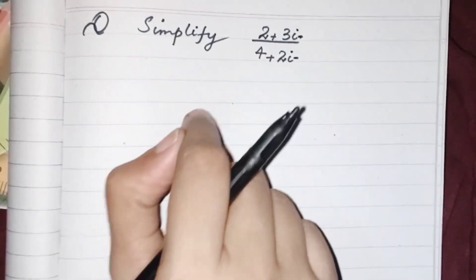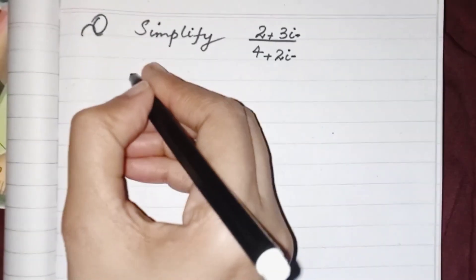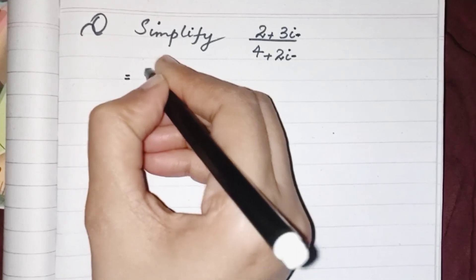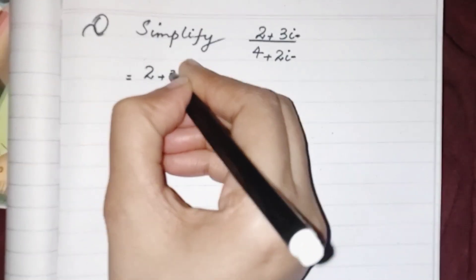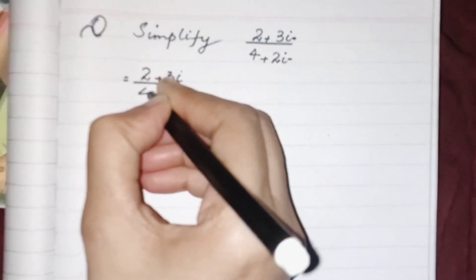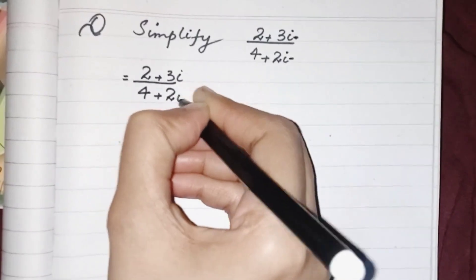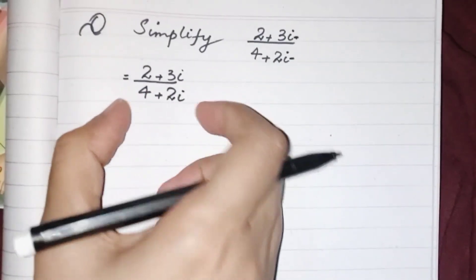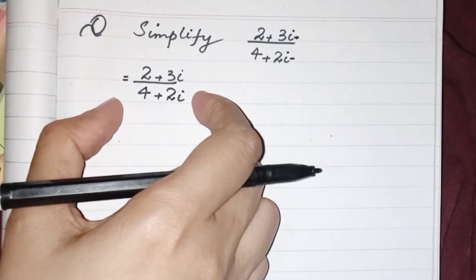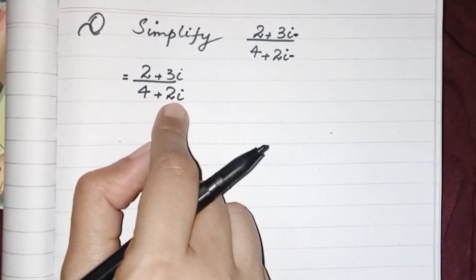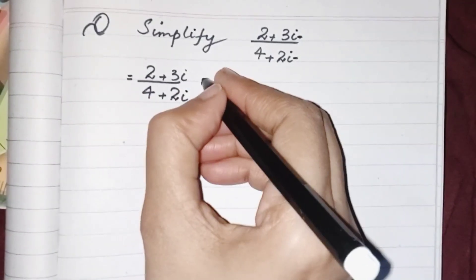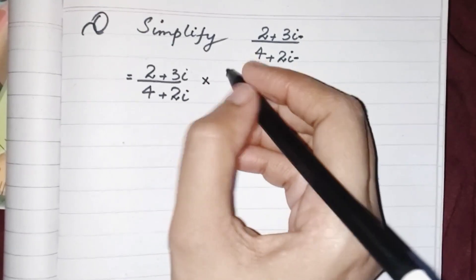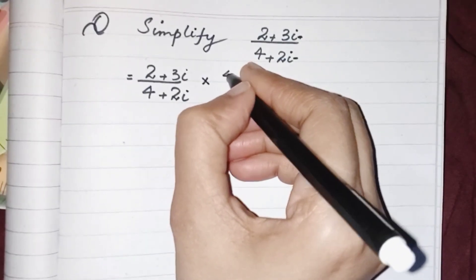A number or term which is not having any i is a real part of this complex number. So how can we solve it? How can we simplify it? First of all, I will write the fraction. We know that this one is a complex fraction, so whenever we have a complex fraction, we cannot write an imaginary number in the denominator.